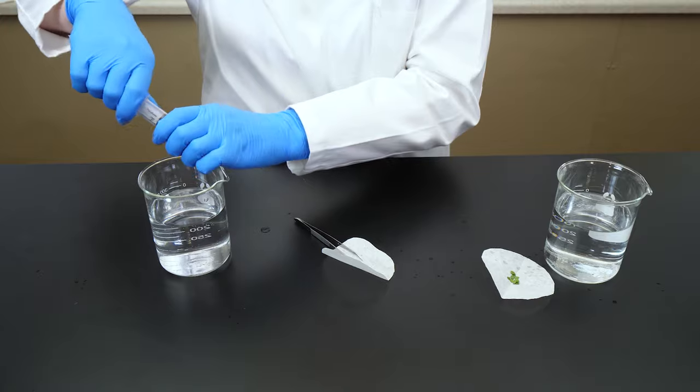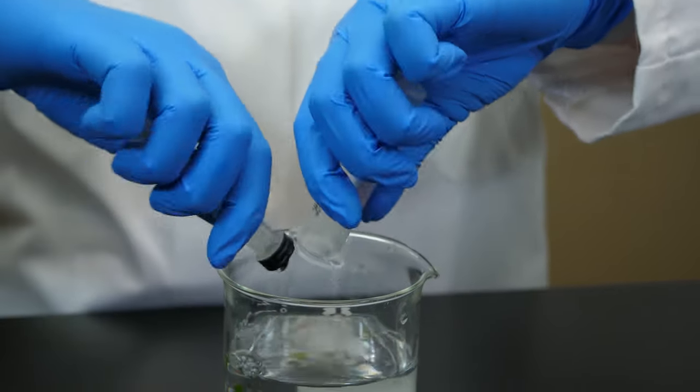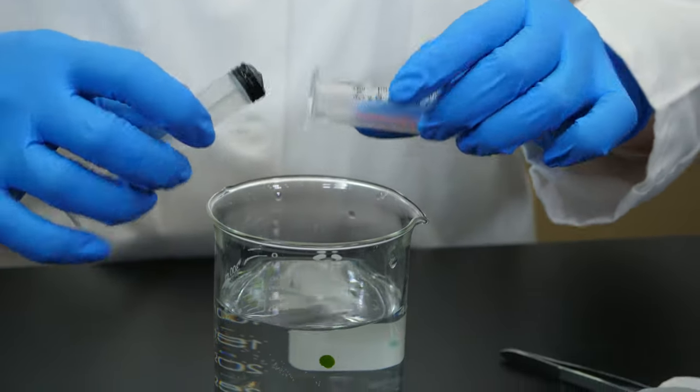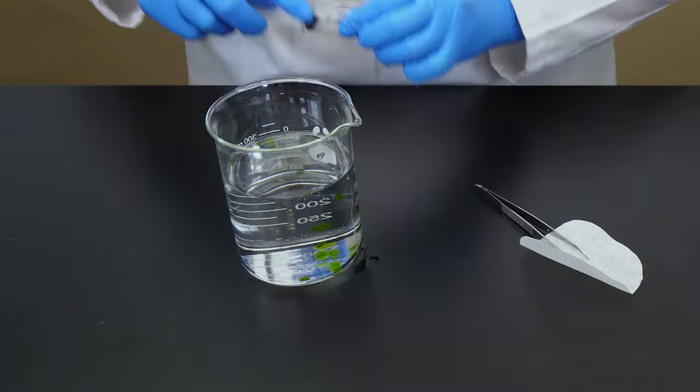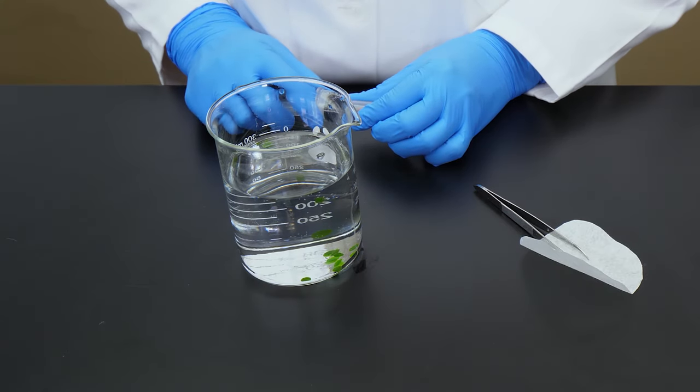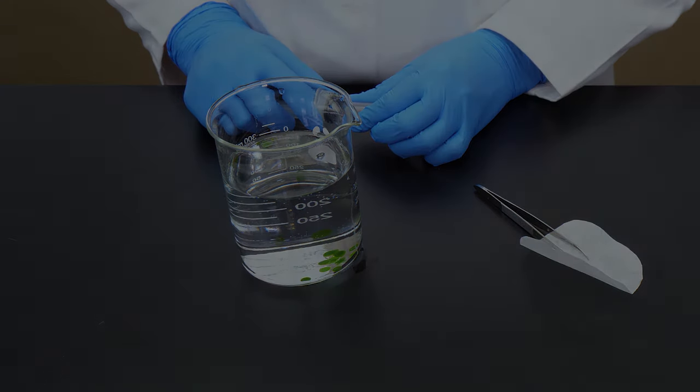Now, we are ready to dump the chads into one of the beakers containing the sodium bicarbonate solution. This group of chads will become our control group. Our control group will be placed in a dark enclosure.